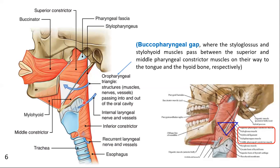Here you can see the buccopharyngeal gap, a triangular area between the superior and middle constrictor muscles. This is the mylohyoid muscle, with the sublingual space above this muscle and the submandibular space below the mylohyoid muscle, and they join together at the posterior aspect of the mylohyoid muscle in the buccopharyngeal gap.